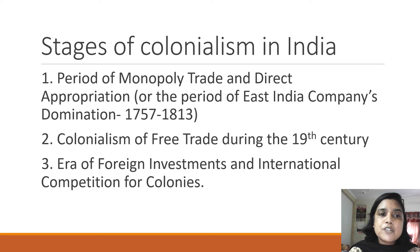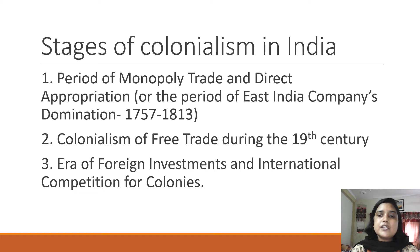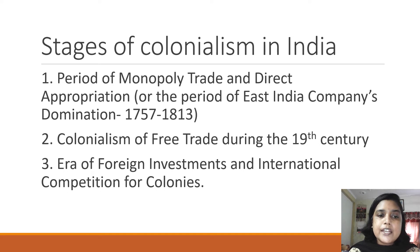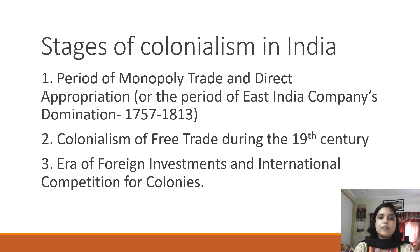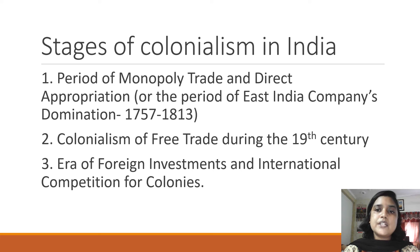The first stage was the period of monopoly trade and direct appropriation, also known as the period of East India Company's domination from 1757 to 1813. The second stage is known as the colonialism of free trade during the 19th century, and the third stage is known as the era of foreign investments in India and international competition for colonies. One entire video will focus upon these stages of colonialism in India.